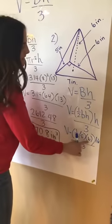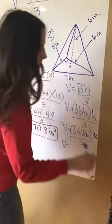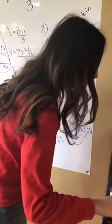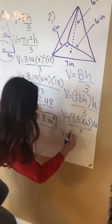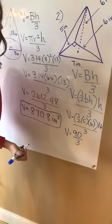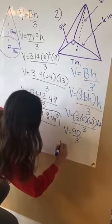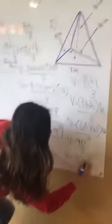Half of 6 is 3 times 5 is 15. And 15 times 6 is 90 to give us our numerator. Doing some mental math because I'm running out of room. Divided by 3 will give us our volume of 30. And it's also inches, cubic inches.